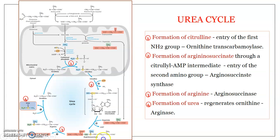The third step is the formation of arginine. Argininosuccinate is cleaved by the enzyme argininosuccinase to yield arginine and fumarate. This fumarate enters the TCA cycle or can enter gluconeogenesis and other metabolic pathways.